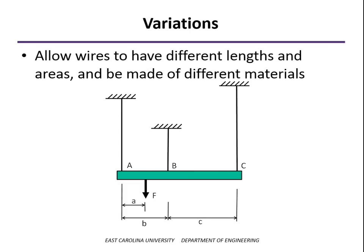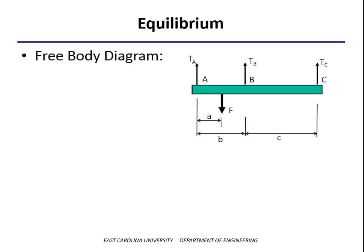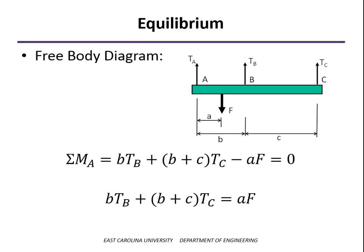All right, let's look at a couple of variations of that problem. Let's kind of do a general solution here where we're going to do it symbolically for the distances A, B, and C as shown, and we'll allow the wires to have different properties as well: different lengths, different cross-sectional areas, different modulus of elasticity. And so going back to our free body diagram, we'll take the sum of the moments about A as we did before. So the only difference in our equation 1 will be that we're putting the symbols in rather than the actual numbers.